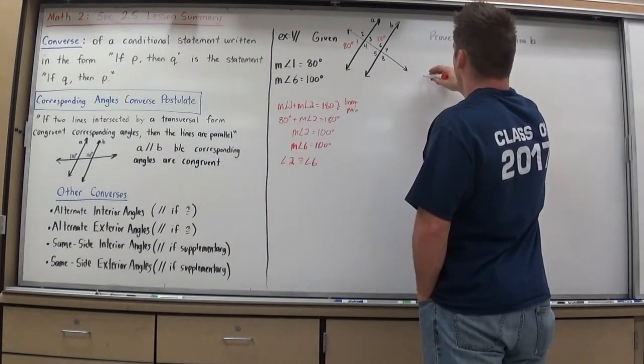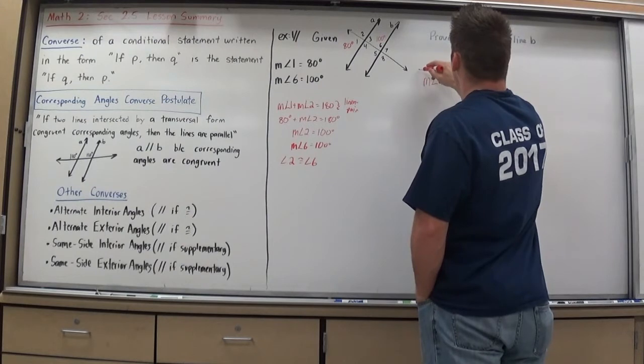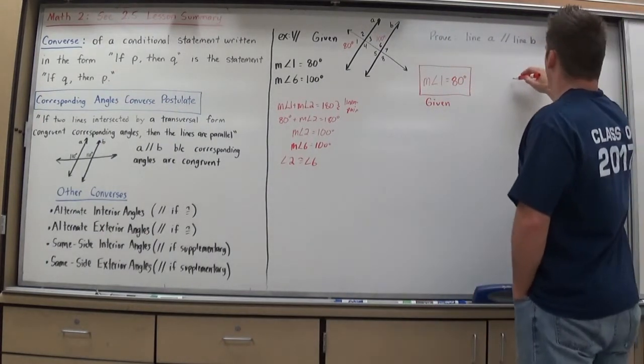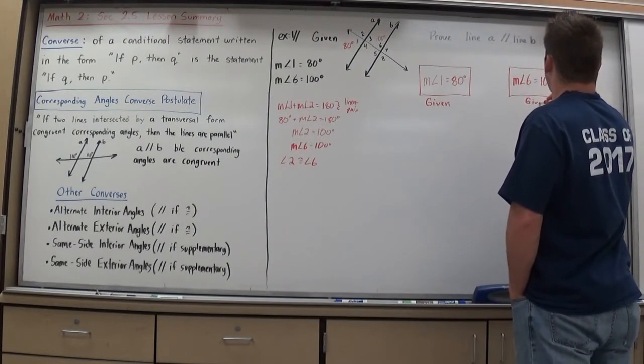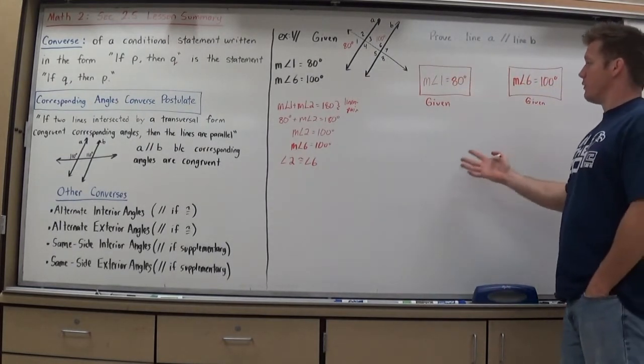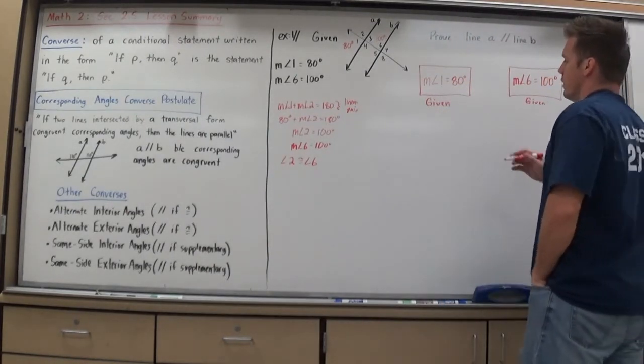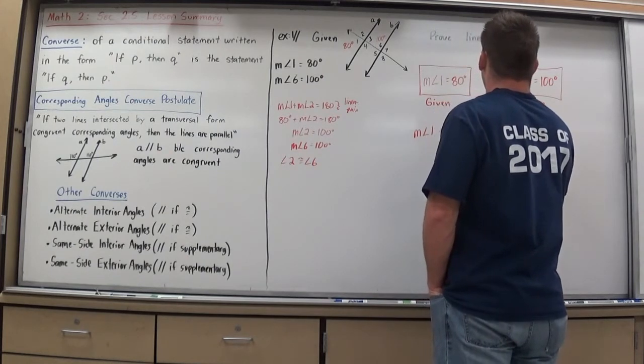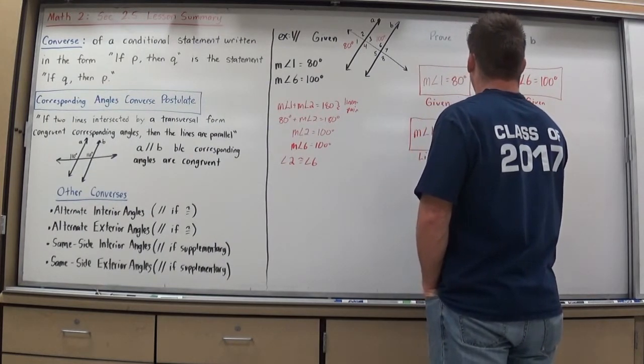So I'm going to do our givens first. So the measure of angle one equals 80 degrees. And that is our given. So I'm going to write the reason under the box. I also know the measure of angle six equals 100 degrees. And that's a given for us. Now on a flow chart proof, I try to show which things I'm using in the next statement if it's possible. If it's its own kind of deal, then I can do a separate box for it. That was its own idea. Didn't really need anything else for that.